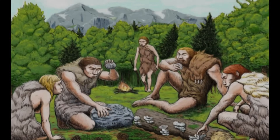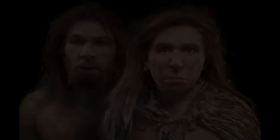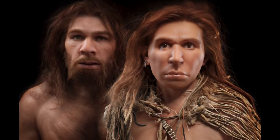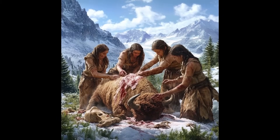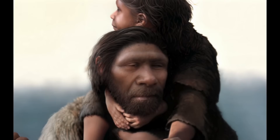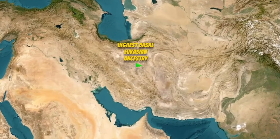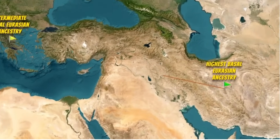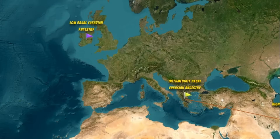When Basal-Eurasians mixed with other early Eurasian groups, they effectively diluted the Neanderthal genetic signature, creating gradients of Neanderthal ancestry still observable in modern populations, with Southern Europeans showing systematically lower Neanderthal ancestry percentages than Northern Europeans. The Basal-Eurasian component appears most strongly in ancient DNA samples from the Near East and early European farmers, with decreasing proportions as one moves northward and westward across Europe.